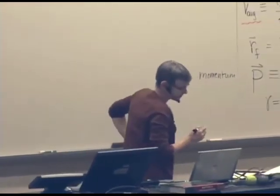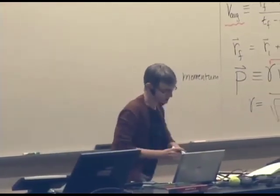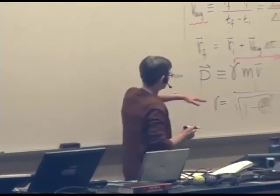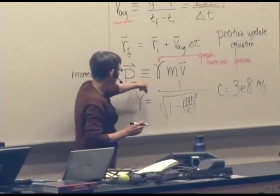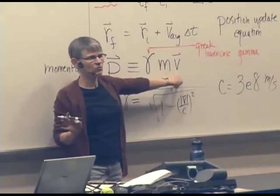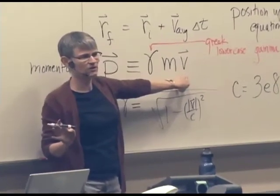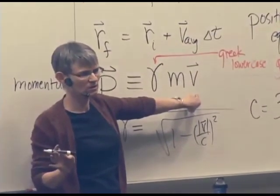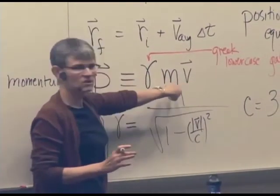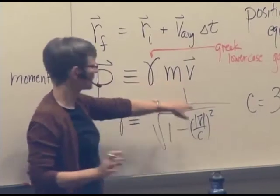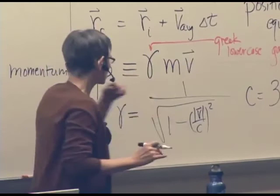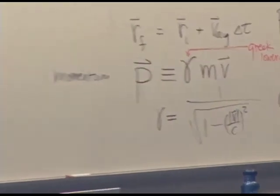So let's take a look at gamma and think about what its possible values might be. First of all, how does the direction of momentum compare to the direction of the object's velocity? It's the same, isn't it? Because here's a vector, here's a vector. This is a scalar, positive scalar. Gamma is a scalar, so it can't change direction. Let's see what values gamma can have.